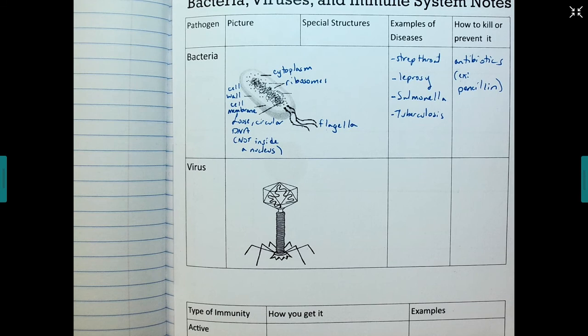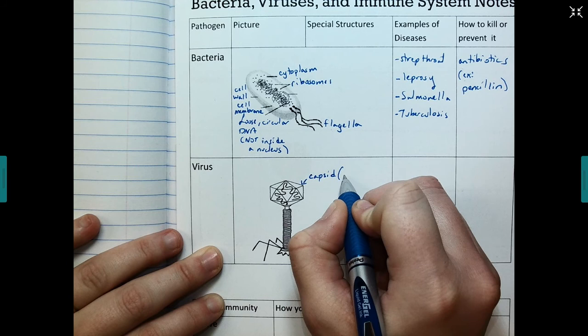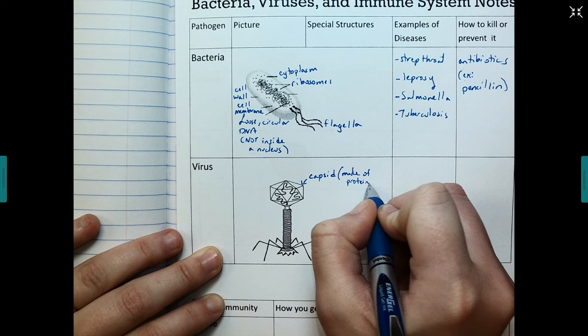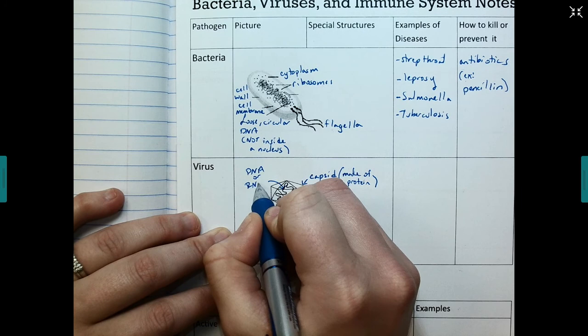The next type of pathogen we have is a virus. So right here we have the capsid, which is typically made of protein. And then inside the capsid is the genetic material, which can be DNA or RNA. Viruses can have one or the other.